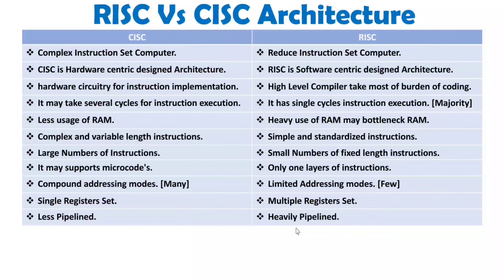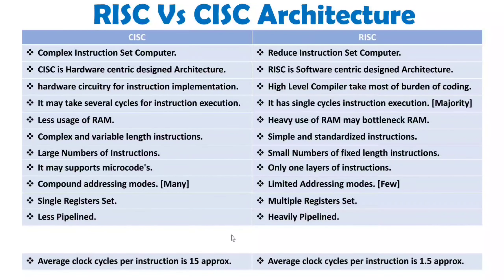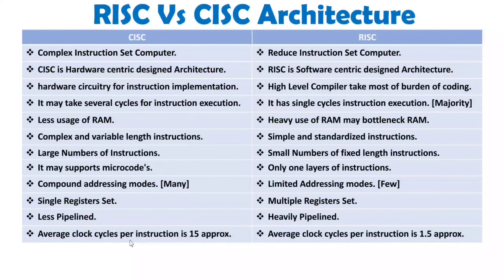If you observe current microprocessors like Core i7, Core i5, and Core i9, multiple cores are available, and with each core there is parallel pipelining, so thousands of instructions are executed in parallel. With CISC, you cannot have multiple instruction execution the same way. The average clock cycles per instruction with CISC is approximately 15, while with RISC it is around 1.5 — so the number of T-states required to execute an instruction is far fewer in RISC compared to CISC.